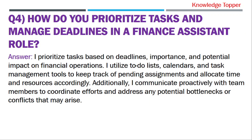Question number four: how do you prioritize tasks and manage deadlines in a finance assistant role? The purpose of this question is that your interviewer wants to evaluate your organizational skills and your ability to manage workload effectively in a fast-paced finance environment. A sample answer: I prioritize tasks based on deadlines, importance and potential impact on financial operations. I utilize to-do lists, calendars and task management tools to keep track of pending assignments and allocate time and resources accordingly. Additionally, I communicate proactively with team members to coordinate efforts and address any potential bottlenecks or conflicts that may arise.